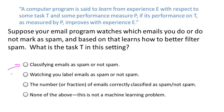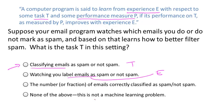Hopefully you got that classifying emails is the task T. In fact, this definition defines a task T, a performance measure P, and an experience E. Watching you label emails as spam or not spam would be the experience E. The fraction of emails correctly classified would be our performance measure P. And so the system's performance on the task T on the performance measure P will improve after the experience E.